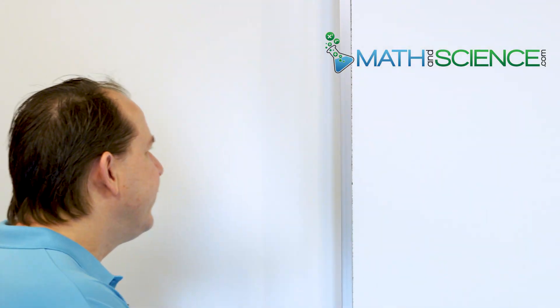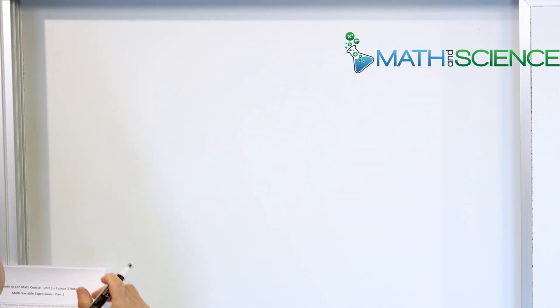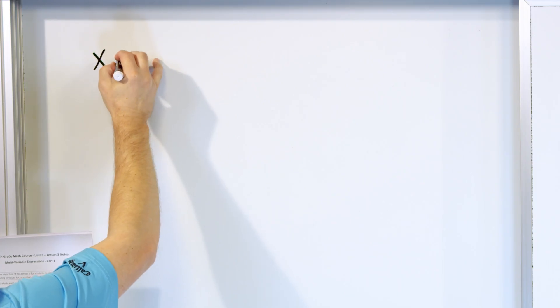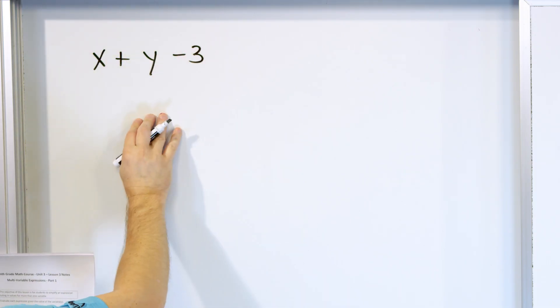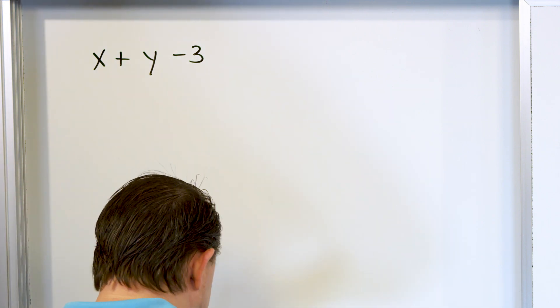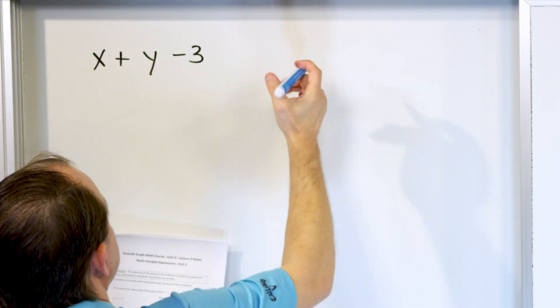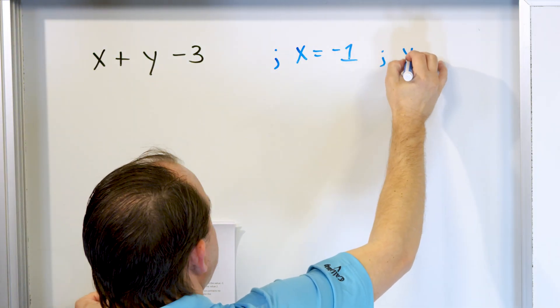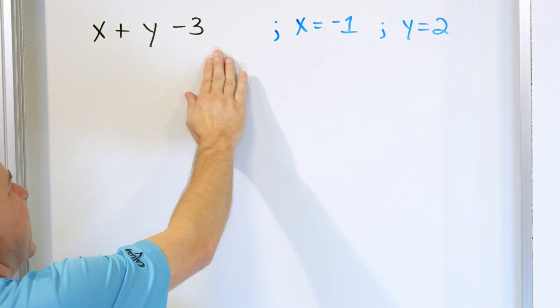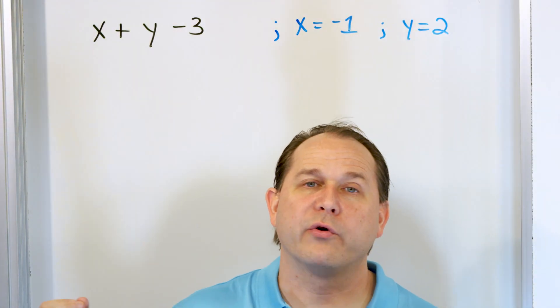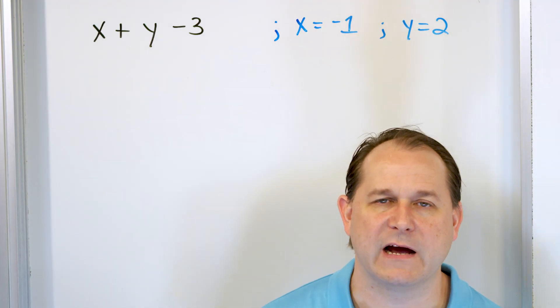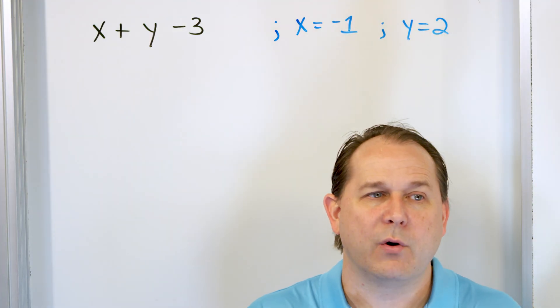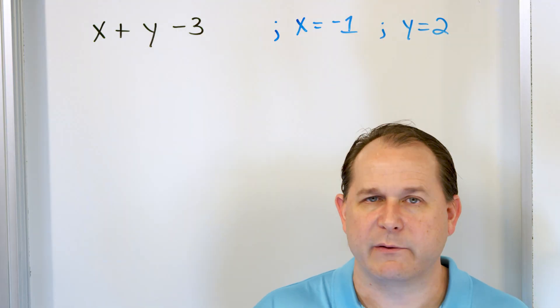In the previous lessons we had x or y or a or b, but you can have expressions with more than one variable. It's perfectly fine. As a simple example, let's take the multi-variable expression x plus y minus 3. I'll give you that x is negative 1 and y is 2. This is our first example of an expression with more than one variable. This kind of thing happens in real life all the time — in many cases your equations will have more than one variable.